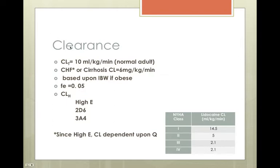It's cleared pretty quickly. Its total body clearance is about 10 mLs per kilogram per minute. It can be much faster than that. If your patient has CHF or cirrhosis of the liver, the clearance is decreased. The fraction excreted unchanged in the urine is 0.05. So only about 5% of it ends up in the urine, which means it's 95% cleared by the liver.